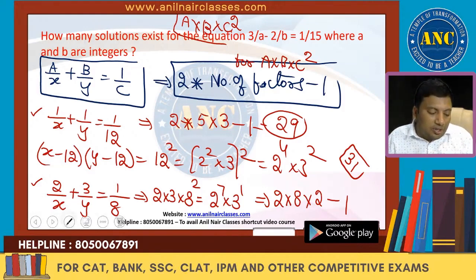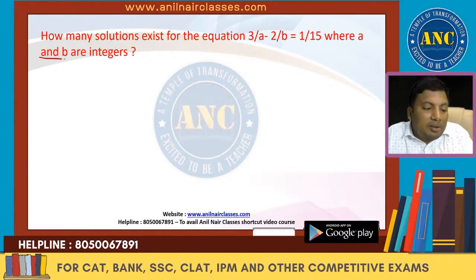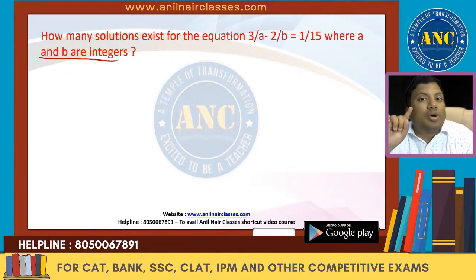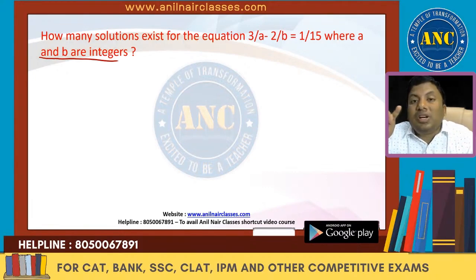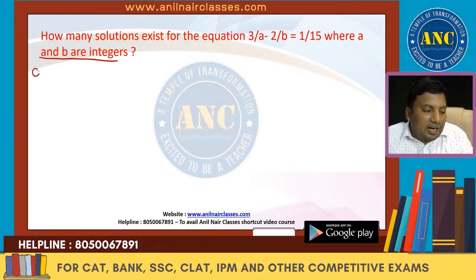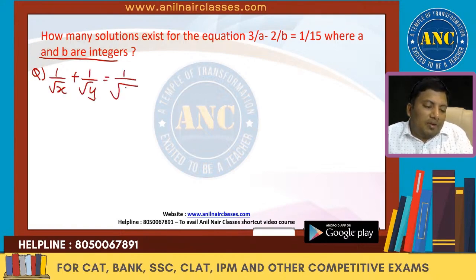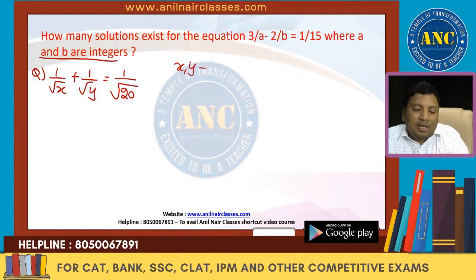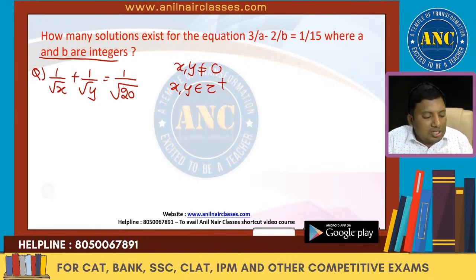Let me change the question so you can solve this type. As long as a and b are integers, the count is 2 times the number of factors. If a and b are natural numbers only, it will not be 2 times the number of factors, because with integers, plus times plus gives plus and minus times minus also gives plus. With natural numbers, only the plus times plus case applies.